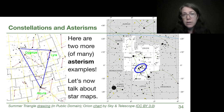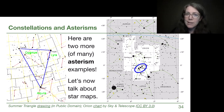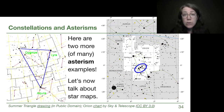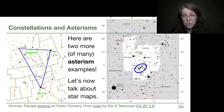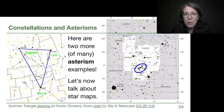Another example is the Great Square of Pegasus — the name would suggest it's in the constellation Pegasus, but only three of the four corners are actually in that constellation and the fourth is in Andromeda. It is really useful to have several of these recognizable patterns in your back pocket so you can get familiar with the night sky. If you're in my lab sections, we'll get to go to the planetarium to see several of these popular constellations and asterisms. If not, you can always explore the night sky with friends and family.